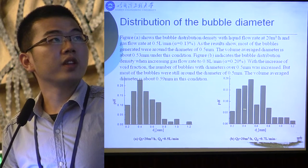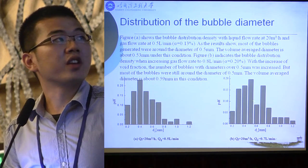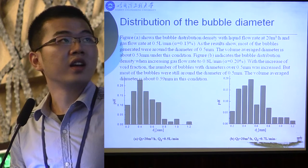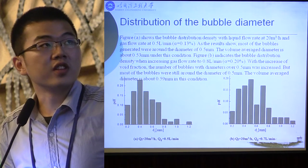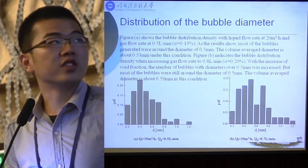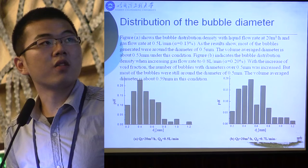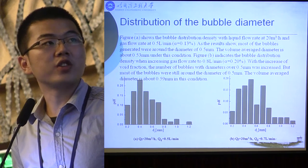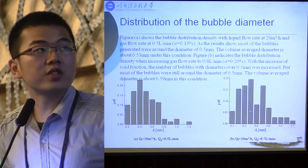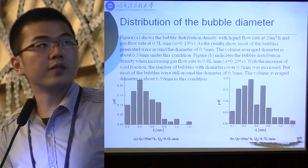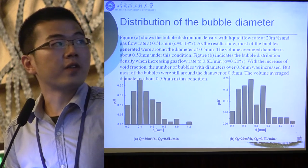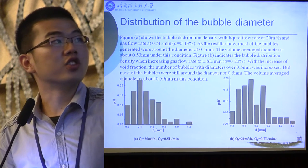The right figure indicates the results when increasing the gas flow rate to 0.8 liters per minute. The void fraction is 0.2%. With the increase of void fraction, the number of bubbles with diameter over 0.5 millimeter increased, but most of the bubbles were still around the diameter of 0.5 millimeter. The volume average diameter is about 0.59 millimeter under this condition.